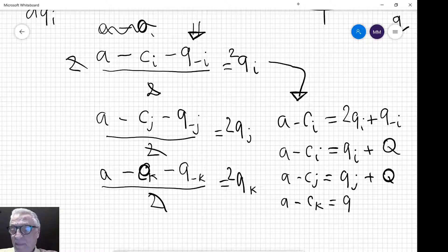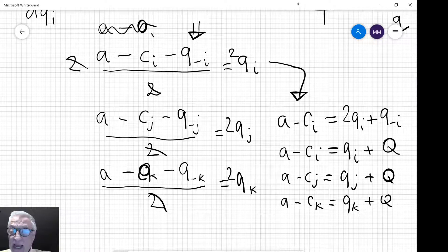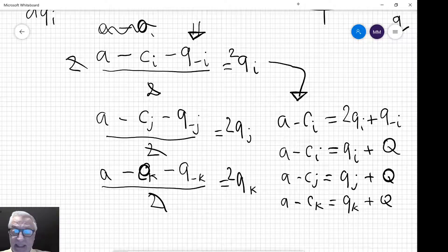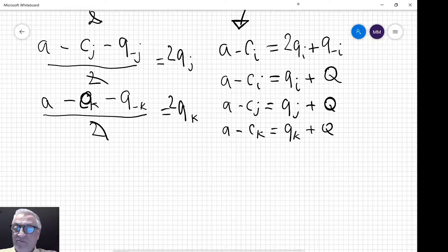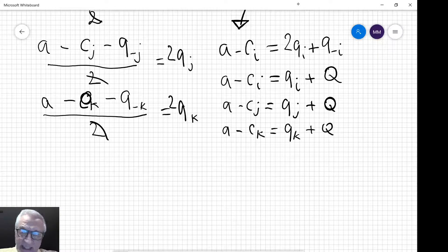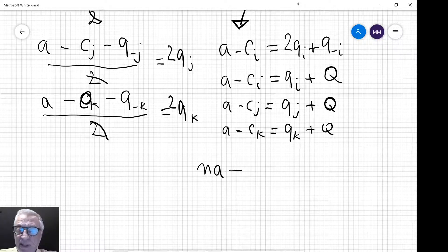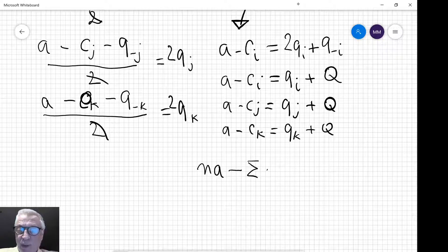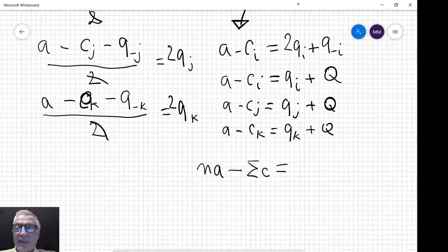So what we can do now is add up all of these. Let's do that. If we had 15 firms we'd have 15 of these, but I'm going to use n as a general notation. So here we have n a's minus the sums of all the marginal costs of the firms in the industry.